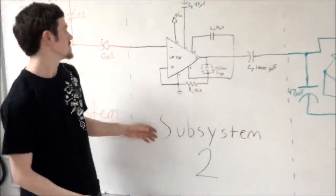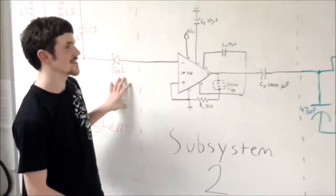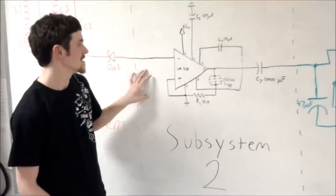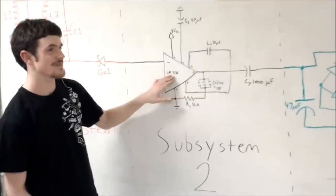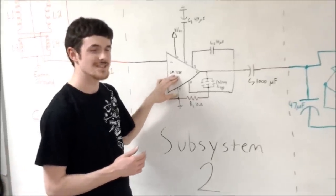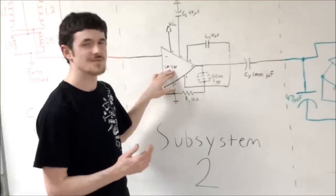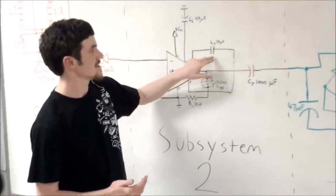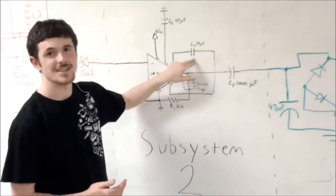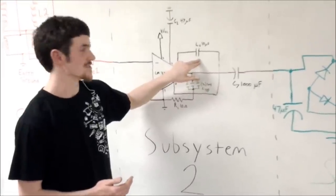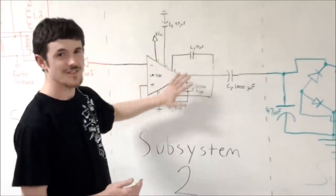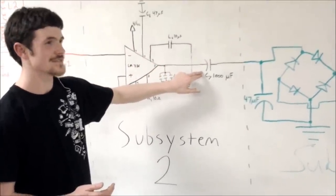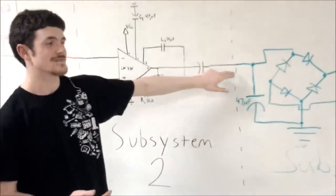This is subsystem two. We are going to take our output from subsystem one but because the voltage is so small we need to amplify its signal so we can read it. We then take an LM386 to amplify our signal. The LM386 is used because it is a really wonderful op amp. It has a pre-built in gain of 20 decibels. Connecting pins one and eight with a 10 microfarad capacitor gives us a gain of 200 decibels which is what we need for our circuit. So we amplify it here. This is all available on the LM386 data sheet. Then we have a 1000 microfarad capacitor which decouples the signal as it passes into subsystem three.